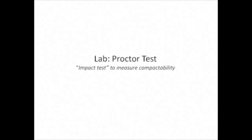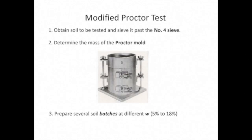In the lab, we routinely measure a soil's compactability by an impact compaction test called the Proctor test. We most often use the modified Proctor test, which was developed during World War II, after its predecessor, the standard Proctor test.